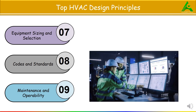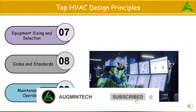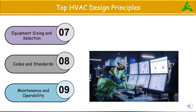Finally, the ninth principle is Maintenance and Operability. The purpose is to ensure the system is easy to maintain and operate efficiently throughout its life cycle. For example, providing access panels in ductwork for cleaning and scheduling filter replacements in an office building ensures indoor air quality and system longevity.